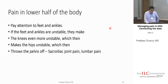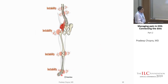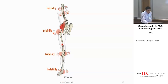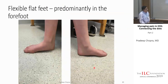Moving on to leg pain. When it comes to the lower extremity, look at the ankles and feet first. If the ankle is unstable, it makes the knee unstable, which makes the hip unstable, which throws the spine off — it's a Jenga tower. Stabilizing the ankle might help the knee, hip, and spine. In EDS, flat feet are a little different: the front of the foot spreads out more when stepping down.